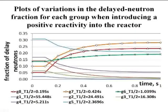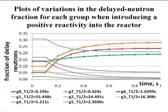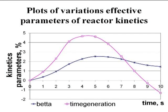Our calculations show that in fast reactors, delayed neutrons in the spatial kinetics have a significant effect. Any perturbation in the reactor is reflected in the fractions of delayed neutrons. For example, if we deal with a positive reactivity, the fraction of neutron groups with short half-life increases, whereas the fraction of the remaining groups decreases. As a result, effective parameters of reactor kinetics are changed.